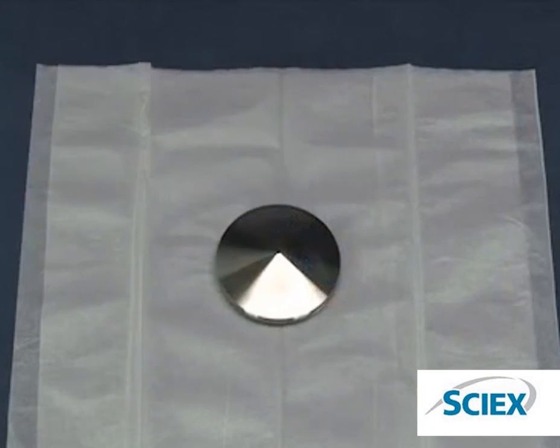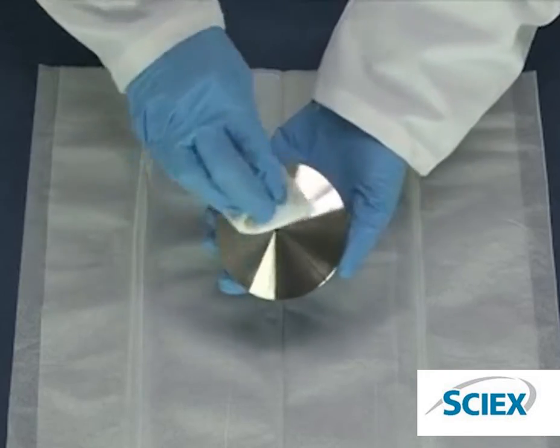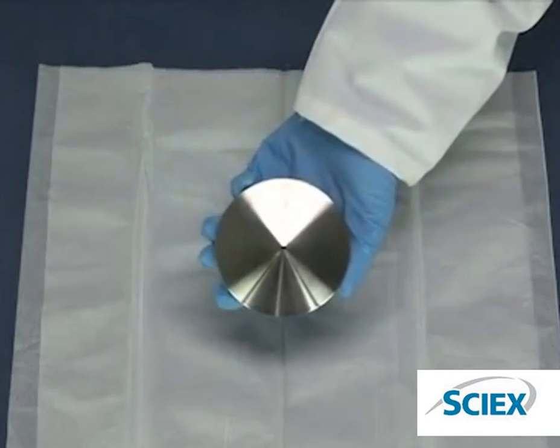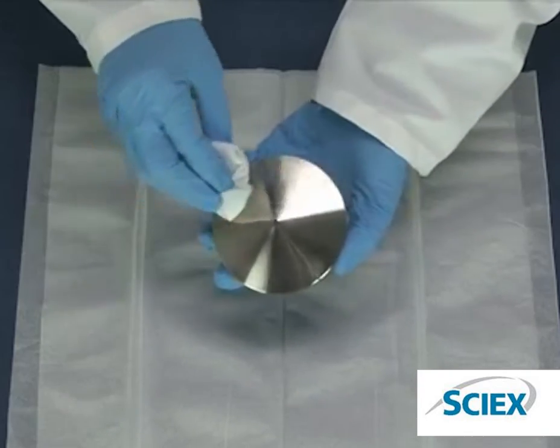Place the current plate cone up on a clean, stable surface. Dampen a lint-free wipe with pure water and clean both sides of the current plate. Repeat using the cleaning solution.